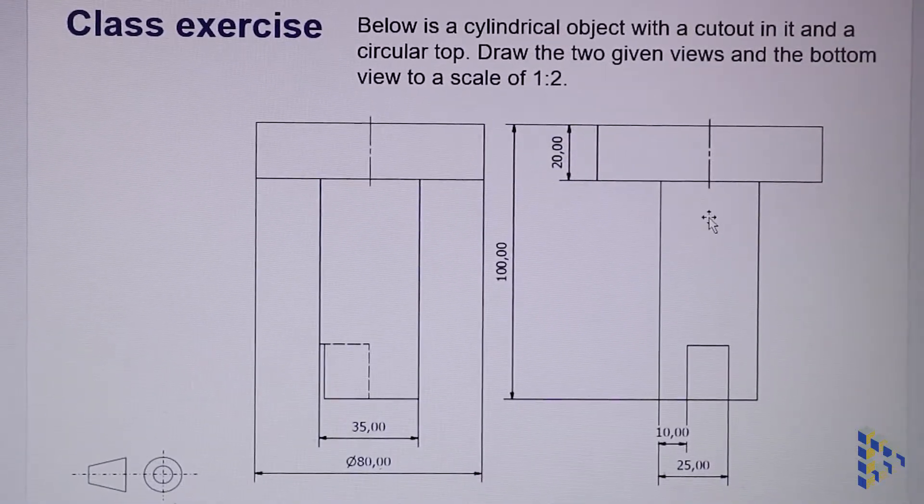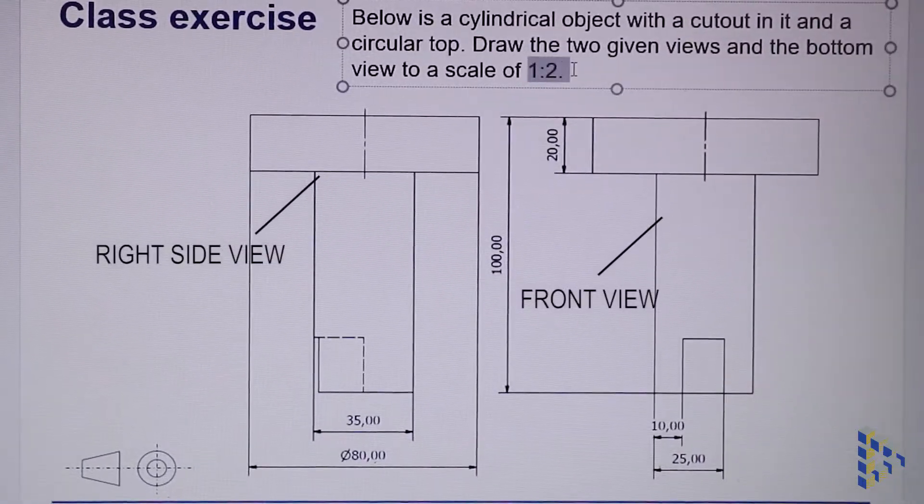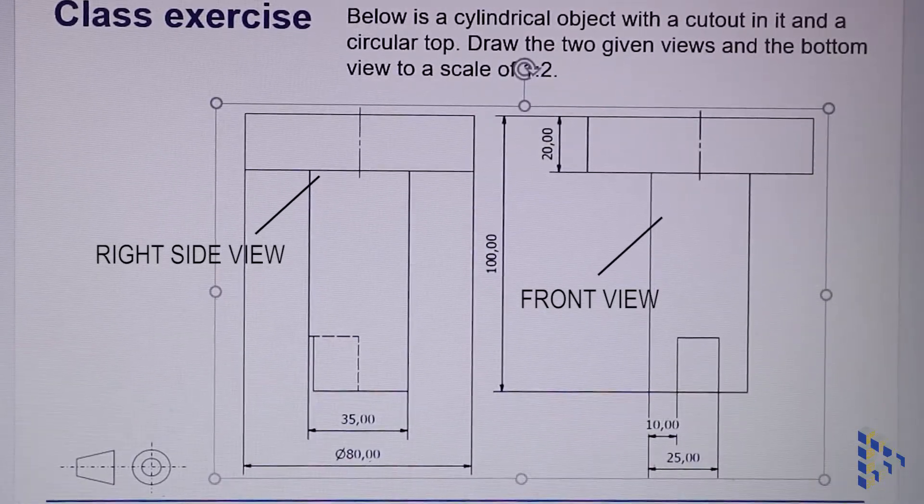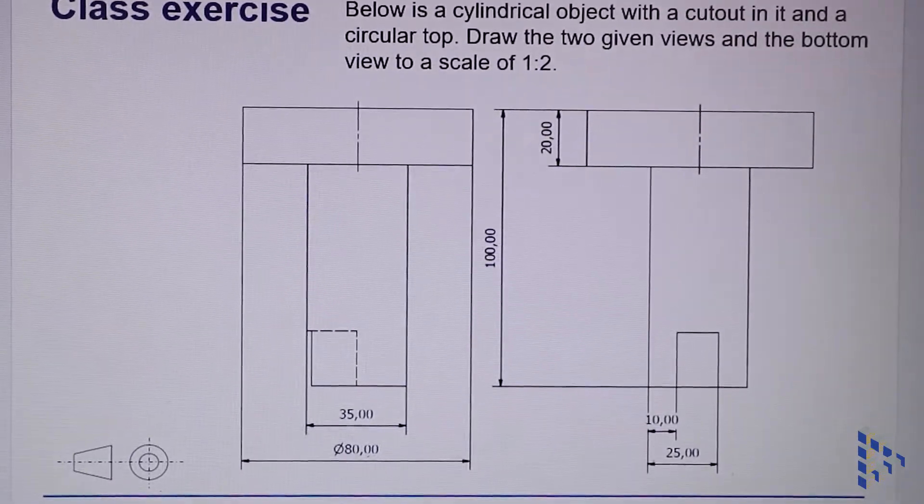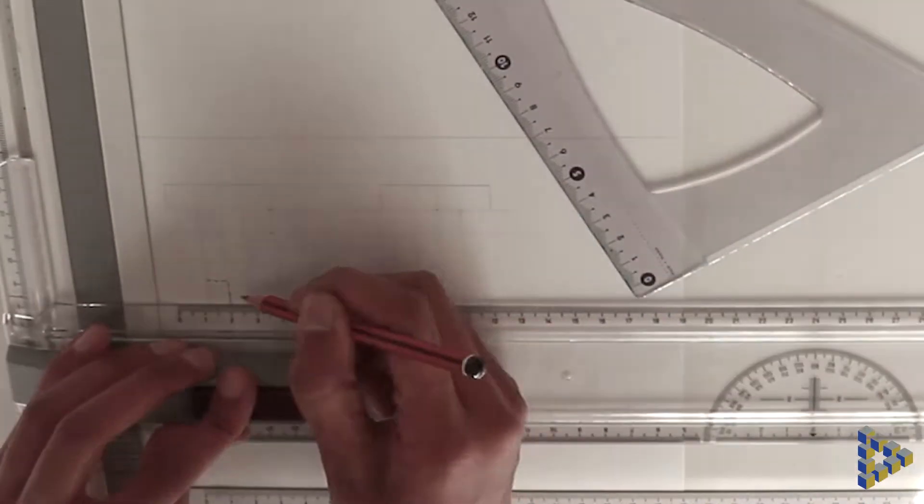Hey guys, in this example we're given two views in first angle orthographic projection. We're asked to draw the bottom view, which implies we've been given a right side view and front view.